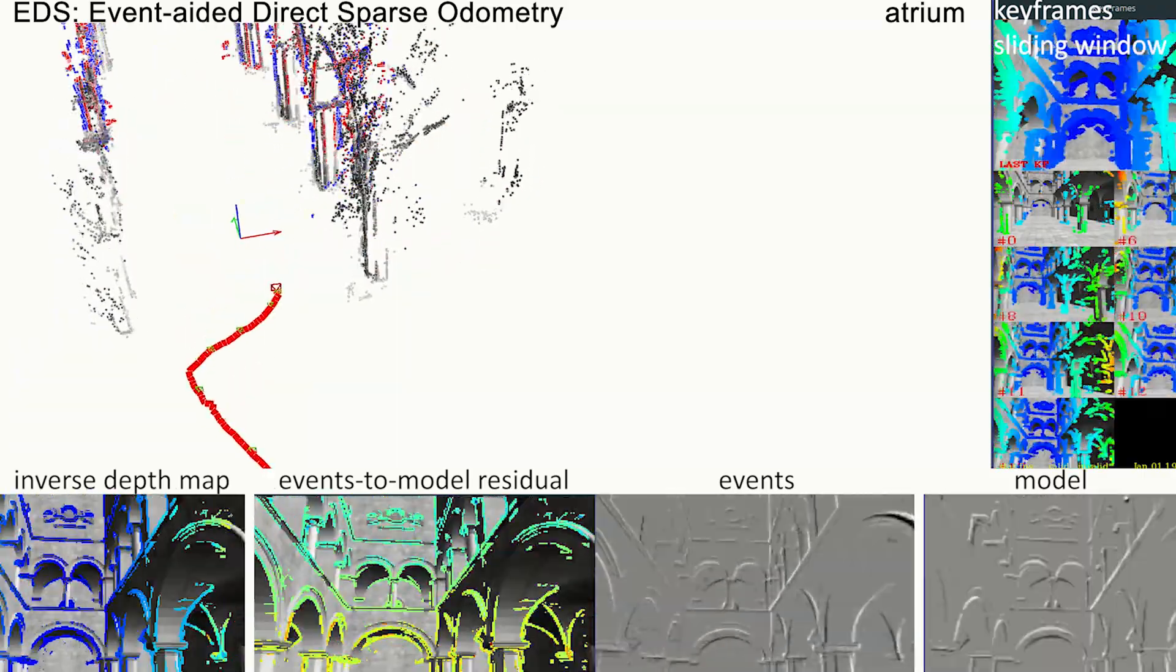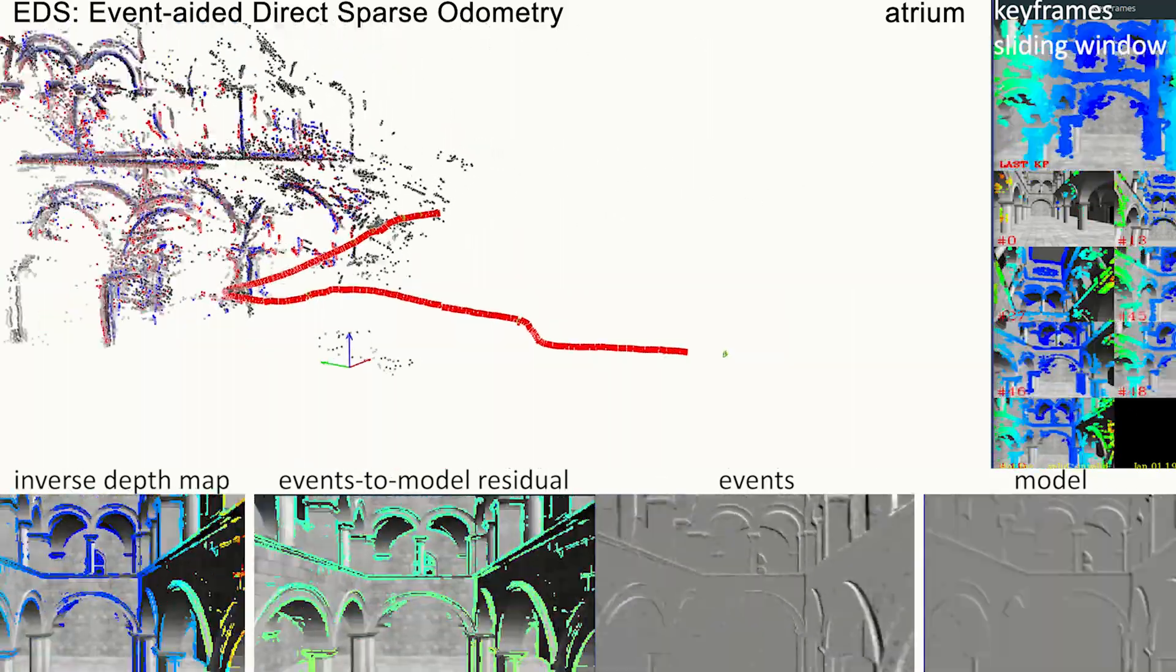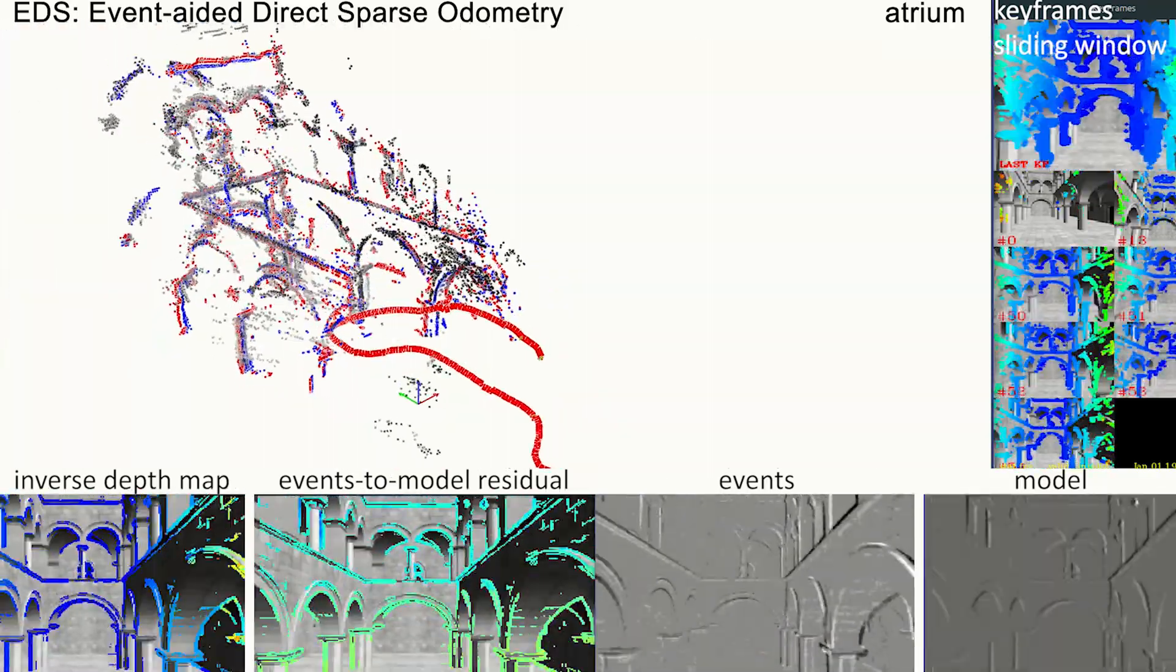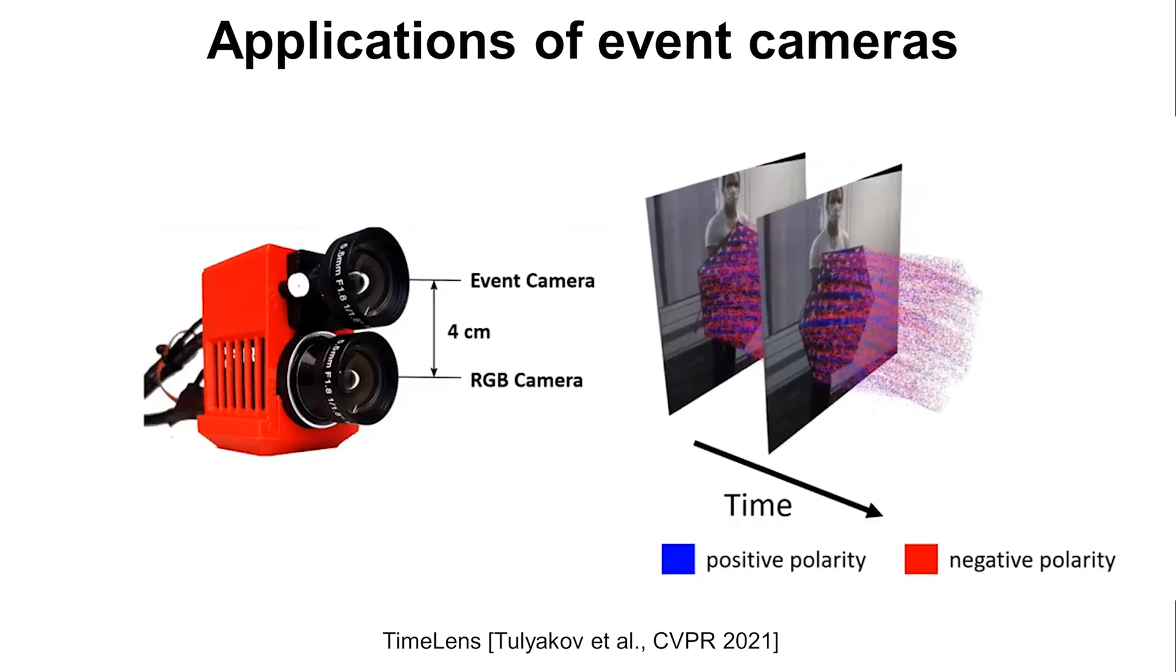Welcome to our paper Event-Aided Direct Sparse Odometry, the first direct method using events and frames. Events and intensity frames are complementary sources of visual information.